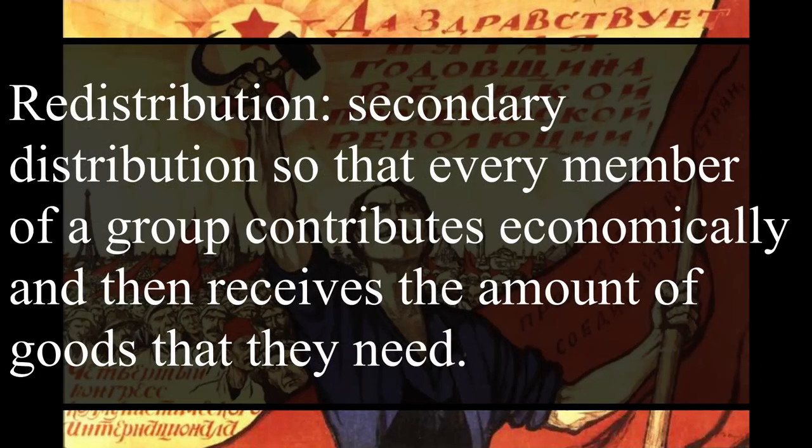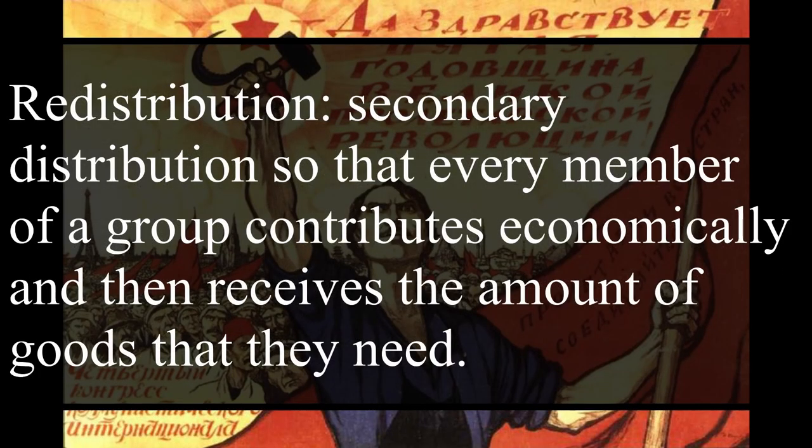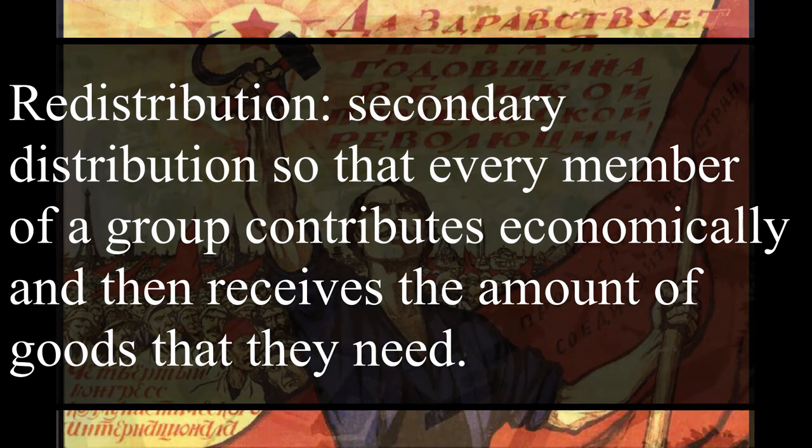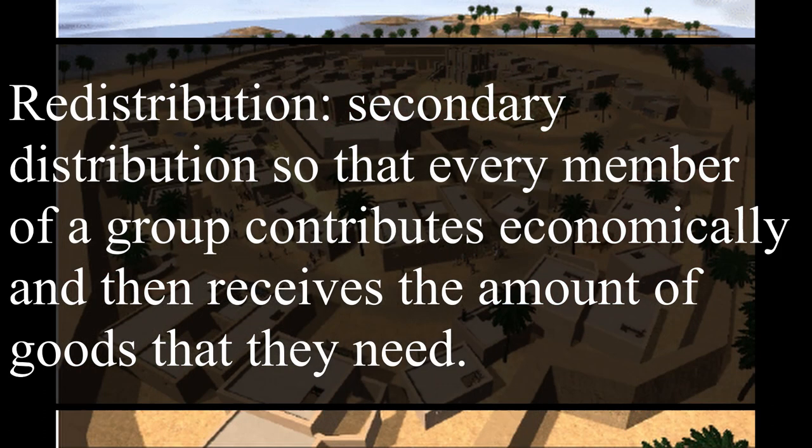Then there is redistribution — centralized distribution so that every member of a group trades into a central body, which then distributes economically and each member receives the amount of goods that they need. This usually requires a unified body or third party to control the redistribution, as in the USSR or in ancient Uruk.